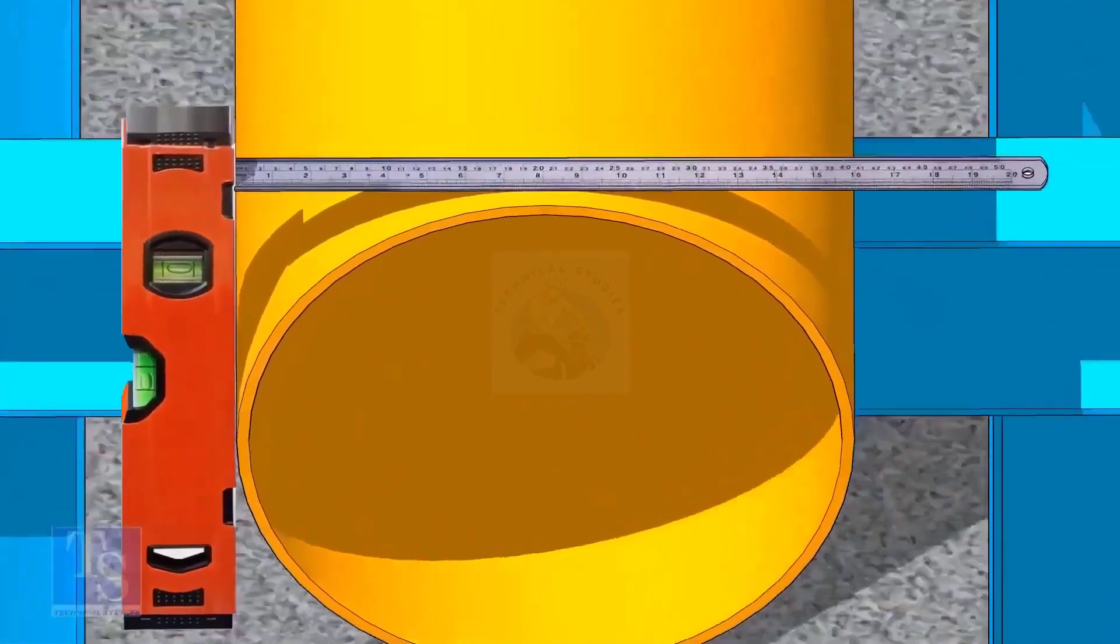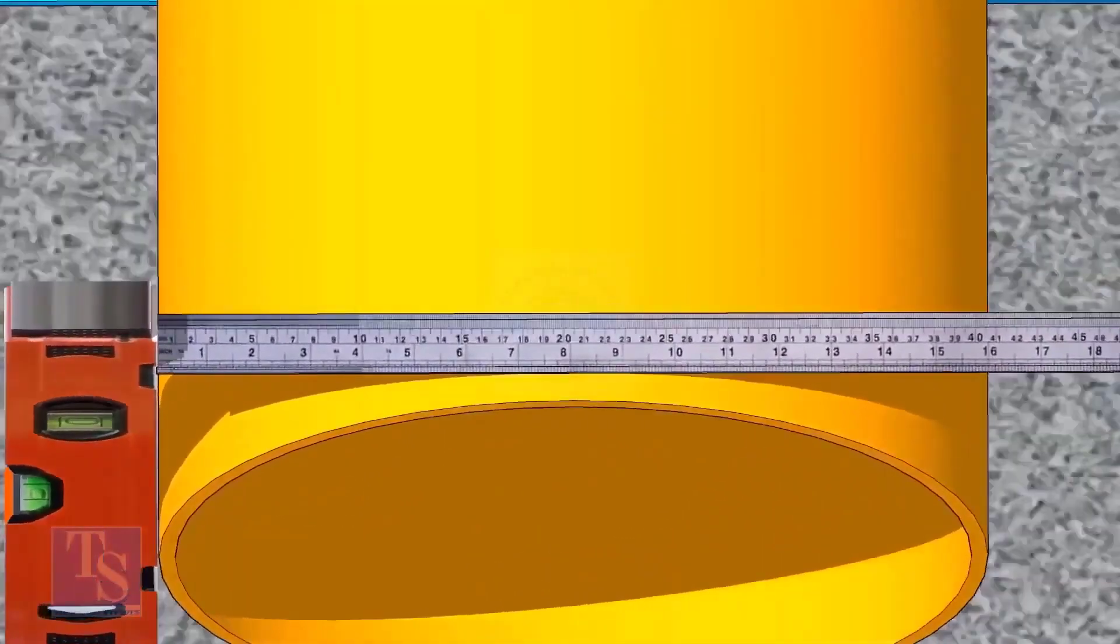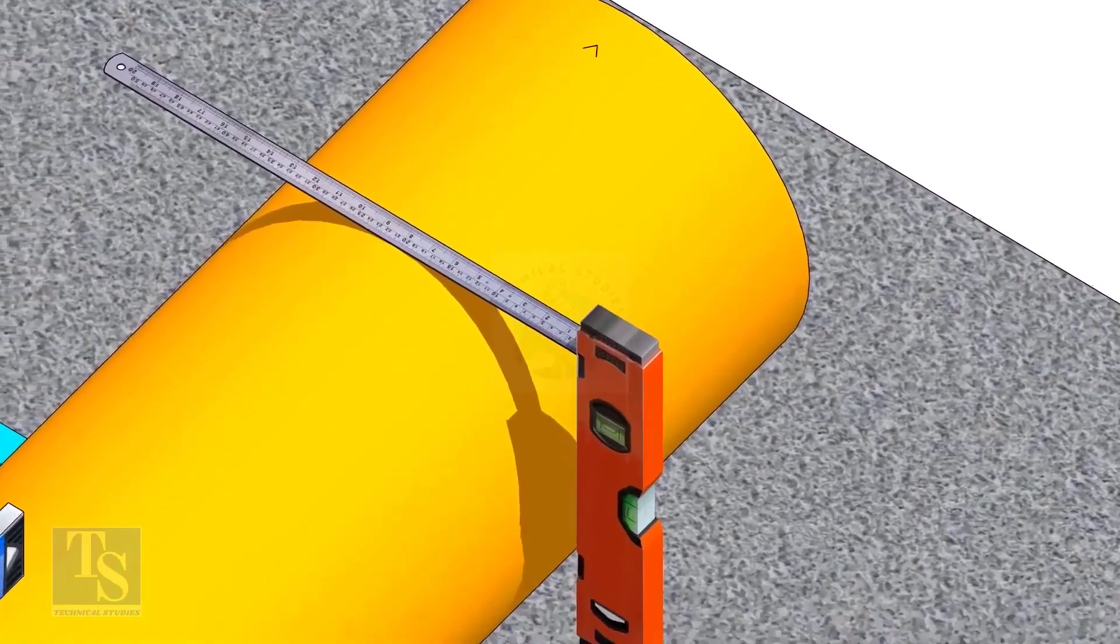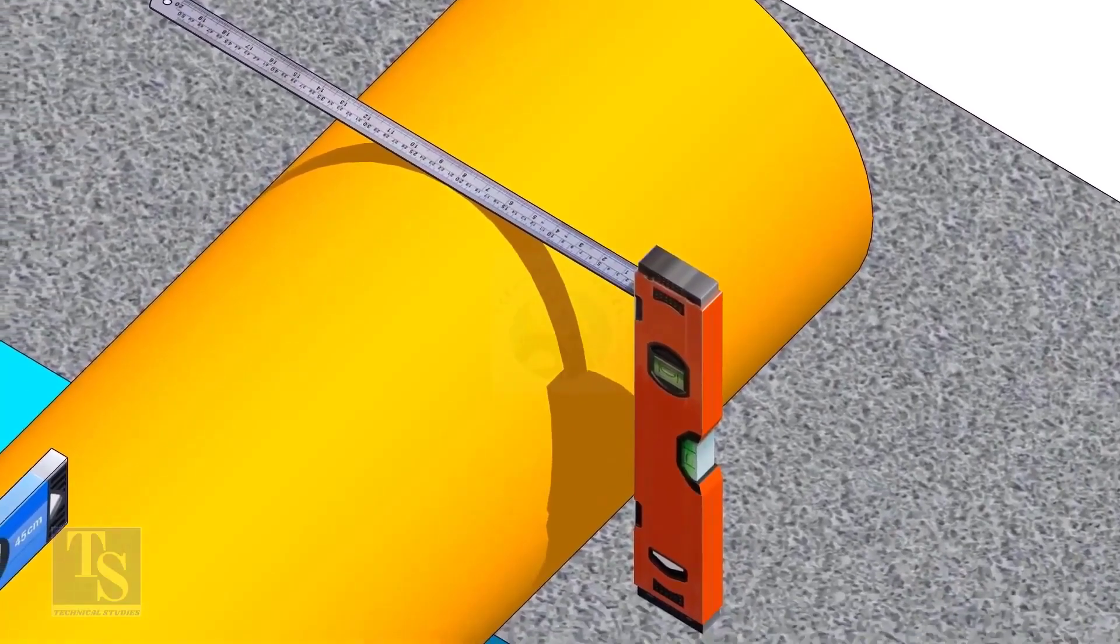Mark half OD at 300mm apart. This pipe OD is 406mm, so mark 203mm from the vertical level bottle on the top of the pipe, and draw a line connecting these marks.